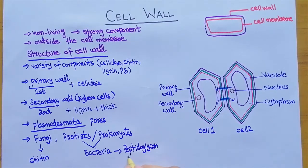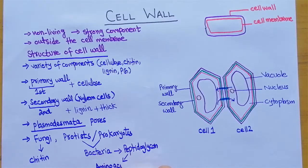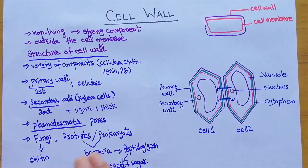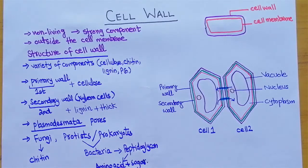Prokaryotes contain peptidoglycan in their cell wall, and peptidoglycan is made up of amino acids plus sugar.